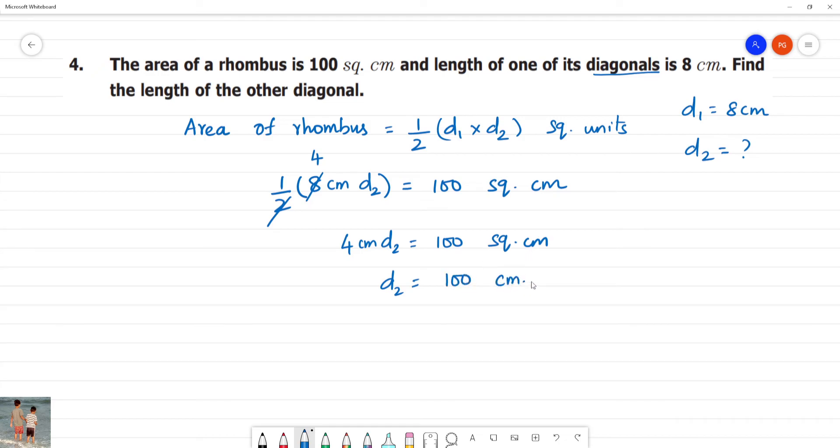Numerator is centimetre multiplied by centimetre divided by 4 in the centimetre. The centimetre cancels, 1, 4 is 4, 25. So diagonal 2 is equal to 25 centimetre.